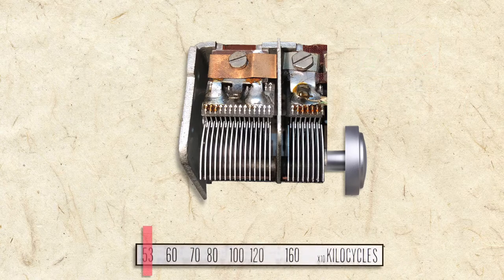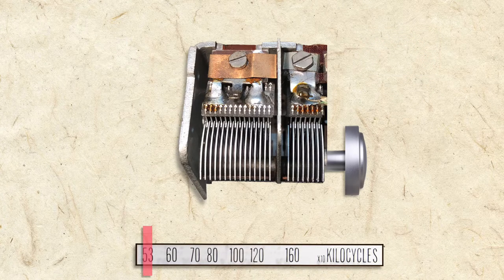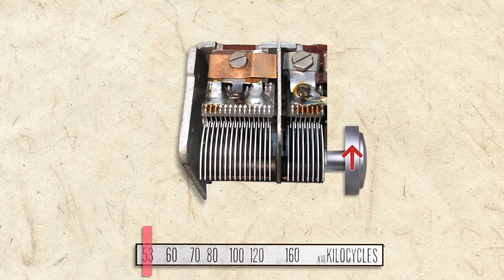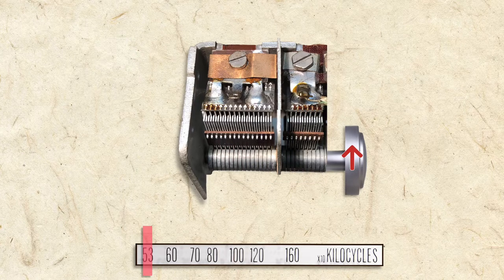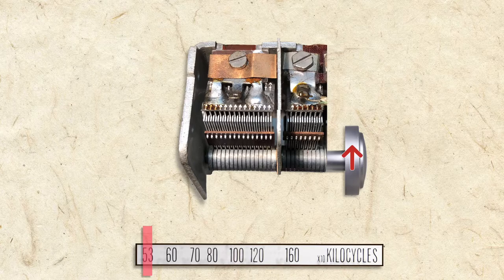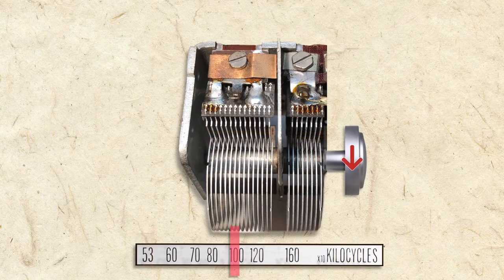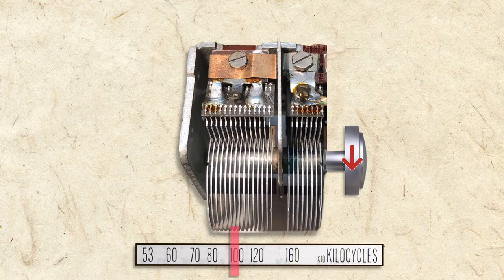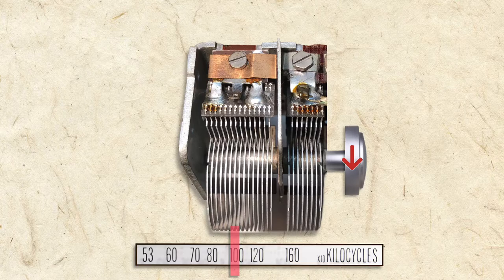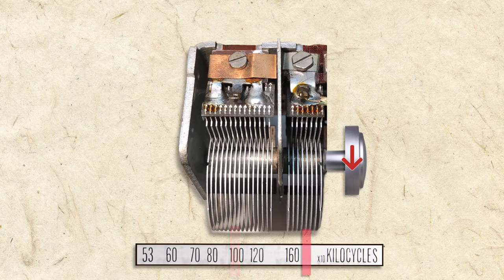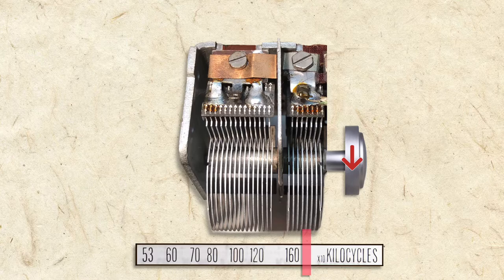To tune the radio to the lowest frequency on the dial, the shaft is turned fully clockwise so the plates are fully meshed. To tune to higher frequency stations, the shaft is gradually turned counterclockwise so the plates gradually unmesh. When the plates are fully unmeshed, the radio is tuned to the highest frequency.